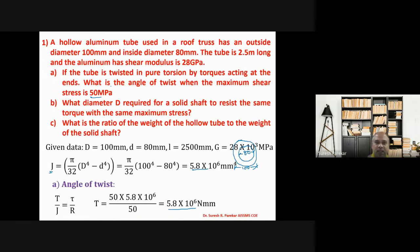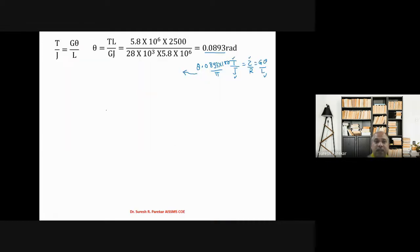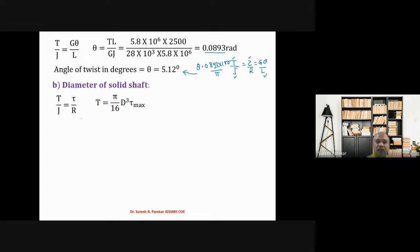For the second part of Problem 1, we find what diameter d is required for a solid shaft to resist the same torque with the same maximum shear stress. Using the formula for a solid shaft T = π/16 × d³ × τ_max, substituting the known torque and τ_max, we get d = 83.91 mm, so we provide a minimum of 84 mm.